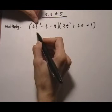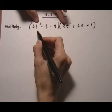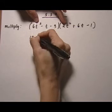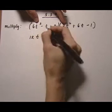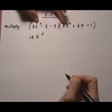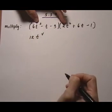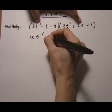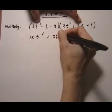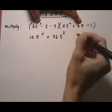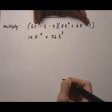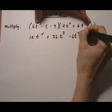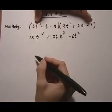We'll start with the 6t squared. First we're going to do 6t squared times 2t squared. So that's going to give us 12t to the fourth power because it's the same basis, you add the exponents. Then we do 6t squared times 6t. So that gives us plus 36t cubed, and then 6t squared times minus 1 is minus 6t squared. We're done with the 6t squared.